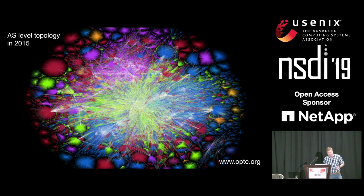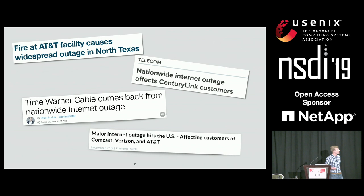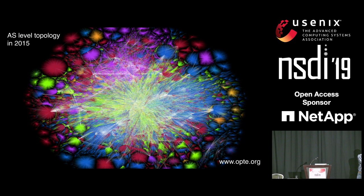Every day on the internet there are network outages, and those outages directly affect users' connectivity. As a network operator, one of your goals is to prevent connectivity disruptions upon such outages. But this is challenging, because this is the AS-level topology in 2015, and in this very large graph there can be a failure anywhere, at any time, affecting any user.